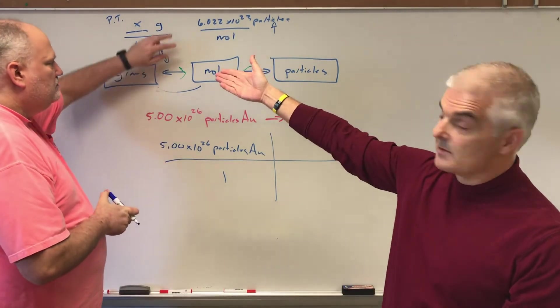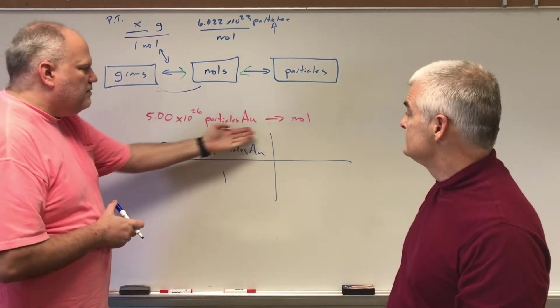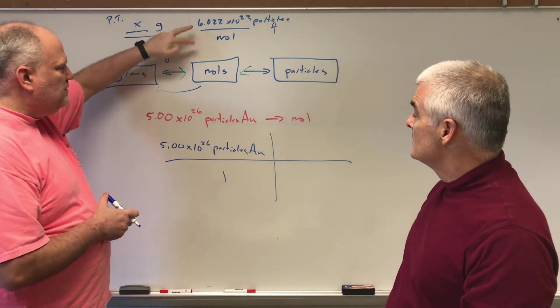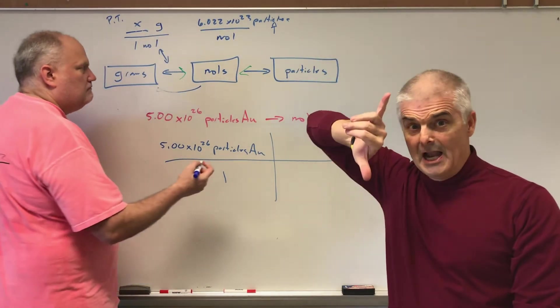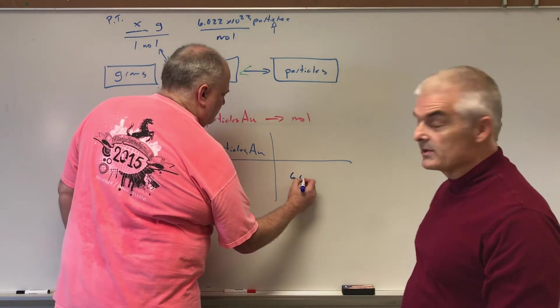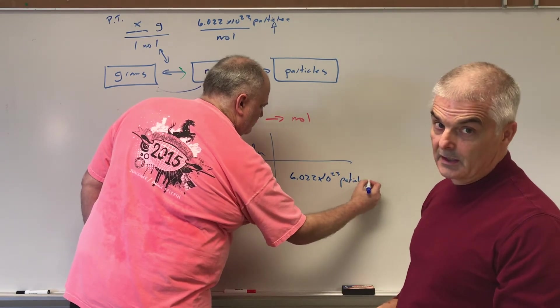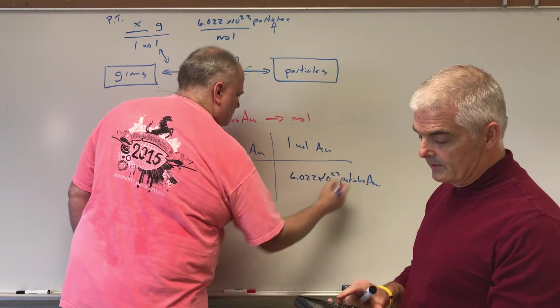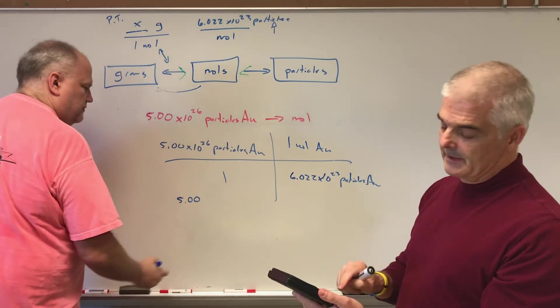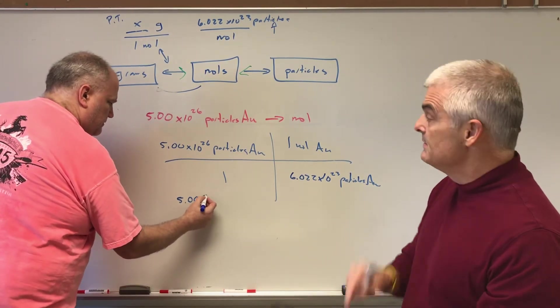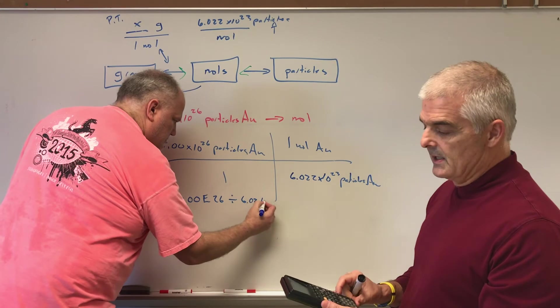So now what we need to do is we need to look at our two fractions: fraction number one, the periodic table one, or the second one, the Avogadro number one. And clearly it's the Avogadro number one, because if you want to go from particles to moles, we have to use this one right here. Now the question is, do we flip this or do we leave it the way it is? I've noticed that particles are on top, and up here they're on top. That doesn't work because they have to cancel, so you're going to flip it. Flip it. All right, we're gonna go 6.022 times 10 to the 23rd particles of gold, Au, is equal to 1 mole. Okay. Now on my calculator, now listen how I type this in. I'm gonna take 5, because it's 5.00, I'm not gonna take 5.00, I hit the double E button, 26, divided by 6.022, double E, 23, and I get 830.28894.